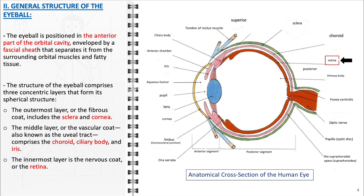The innermost layer is the nervous coat, or the retina. This layer houses photoreceptor cells that are sensitive to light and is responsible for converting light into electrical signals. These signals are then relayed to the brain via the optic nerve, culminating in visual perception.